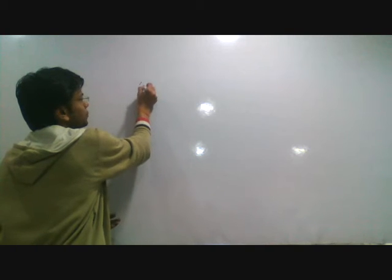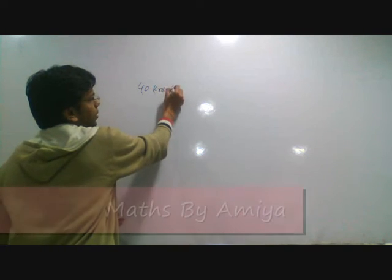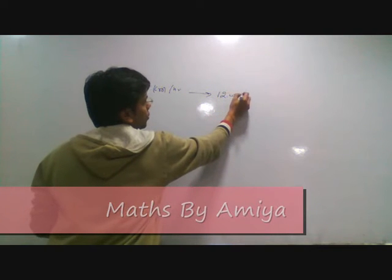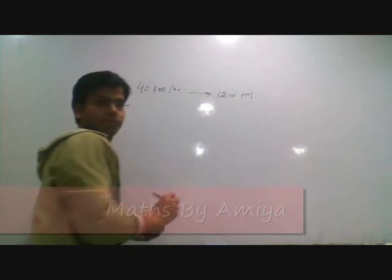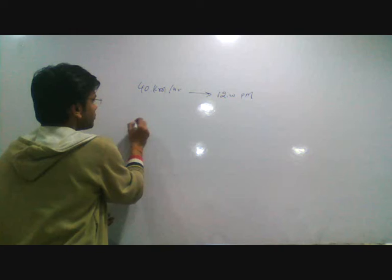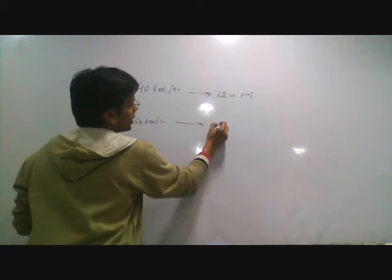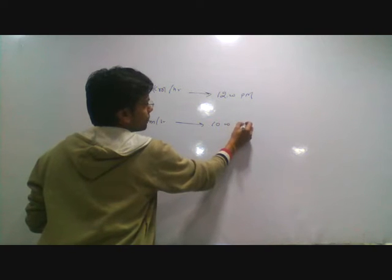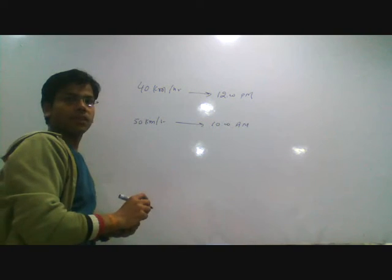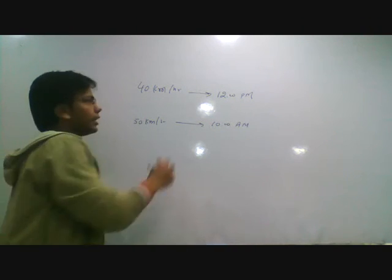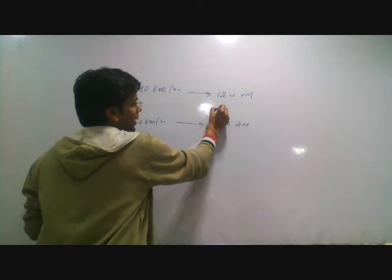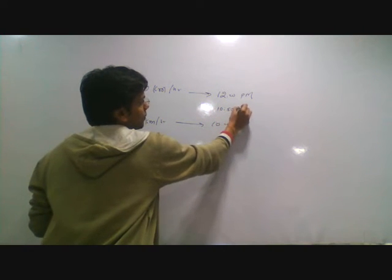If our speed is 40 km per hour, we will reach at 12 noon. If our speed is 50 km per hour, we will reach at 10 in the morning. What would be our speed if we want to reach 10:50 morning?